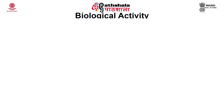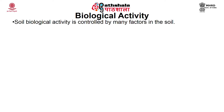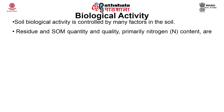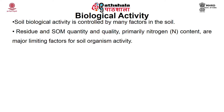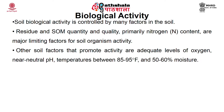Soil biological activity is controlled by many factors. Residue and soil organic matter quantity and quality — primarily nitrogen content — are major limiting factors for soil organism activity. Other soil factors that promote activity are adequate levels of oxygen, near-neutral pH, temperature between 85 to 95 degrees Fahrenheit, and 50 to 60 percent moisture. A combination of these factors will result in maximum activity. Although some organisms have adapted to extreme environmental conditions, overall activity generally diminishes when conditions fall outside of these ideal ranges.